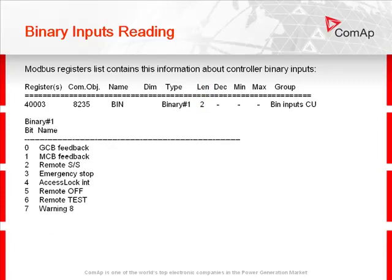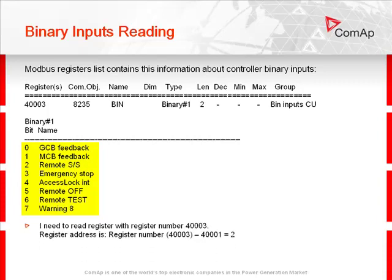I am going to read the first byte only, because I am interested in the state of the first 8 binary inputs. You can see them here. I need to read the register with register number 4003, and the register address is 2.